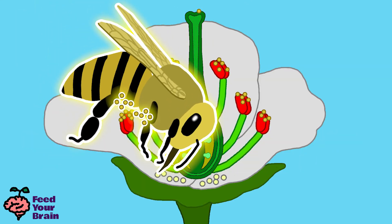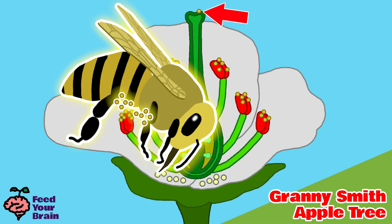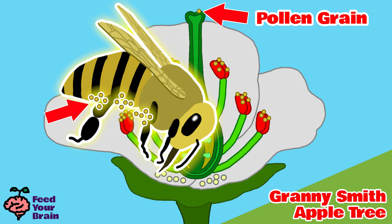Now the honeybee has landed on a flower blossom on a Granny Smith apple tree. A pollen grain that was on the honeybee got stuck to the top of this flower's pistil at the stigma — so now a pollen grain from the red delicious apple tree is on the stigma of the Granny Smith apple tree. Then pollen from this Granny Smith flower also got stuck on the back leg of the honeybee, so it now carries pollen from both trees.